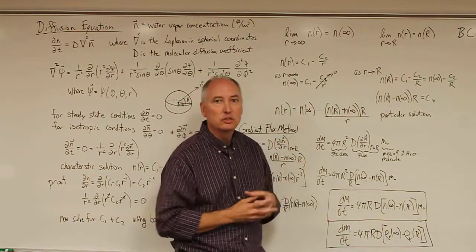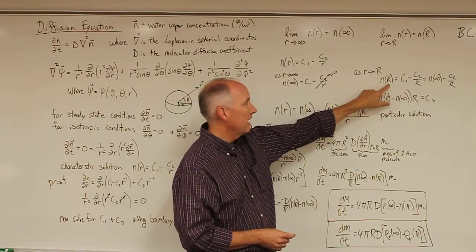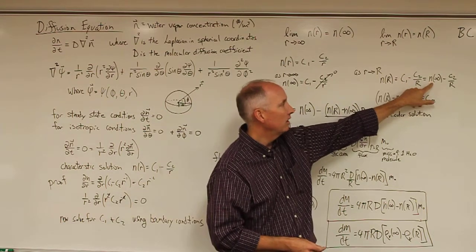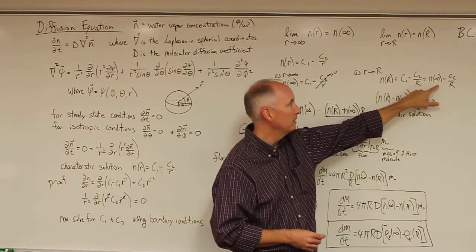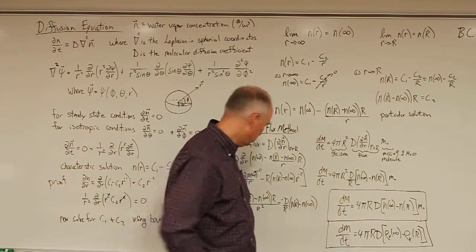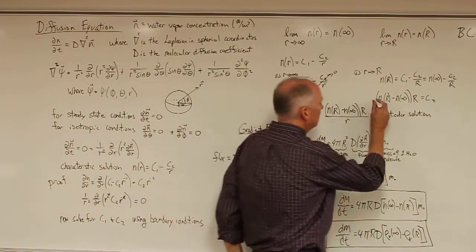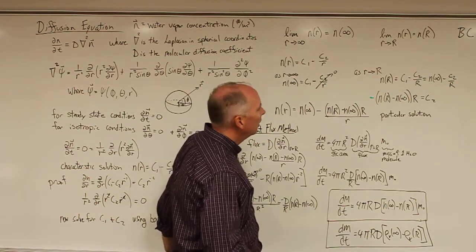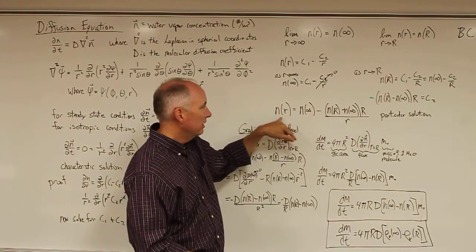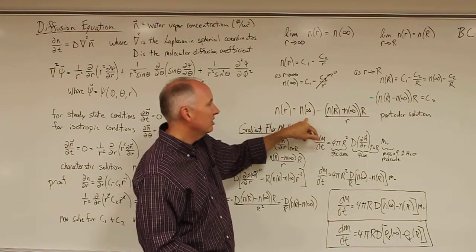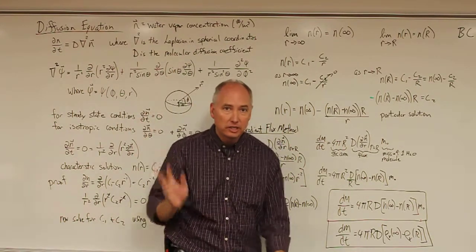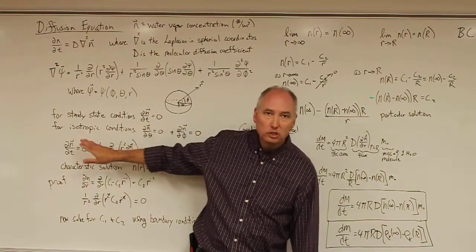The second boundary condition is that as r collapses to the droplet surface (capital R, the radius of the droplet), the number concentration equals n(R) = C1 minus C2 over R. Since we now know C1, we can solve for C2: C2 equals negative (n(R) minus n(infinity)) times R. Substituting both constants into the characteristic equation gives us the particular solution for the diffusion equation, assuming steady state and isotropic conditions.